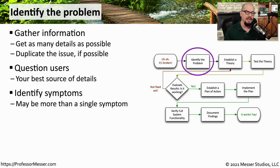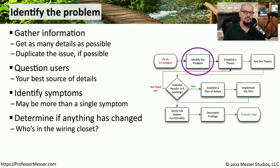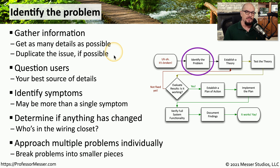There may be a number of symptoms they might be experiencing — error messages on the screen, slowdowns to the network — and all of these details can help you narrow down where the problem might be occurring. Sometimes a problem begins because of something that we did, so it's useful to know if anybody was working inside a wiring closet or if any changes were made overnight. Although some problems may seem almost insurmountable, every issue can be broken down into smaller pieces, and you can start troubleshooting each piece at a time.